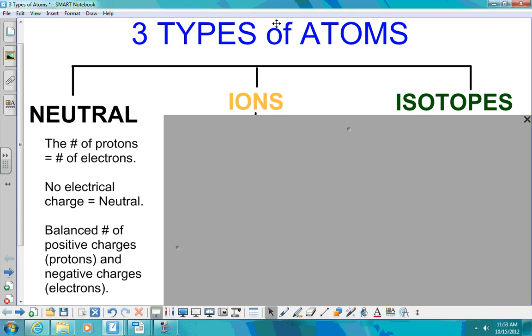And when you look at the periodic table, all that information on the periodic table is describing your neutral atoms. The number of protons will equal the number of electrons in a neutral atom. No electrical charge, it's neutral. Hence the word or name neutral atom. So it has a balanced number of positive charges and negative charges.